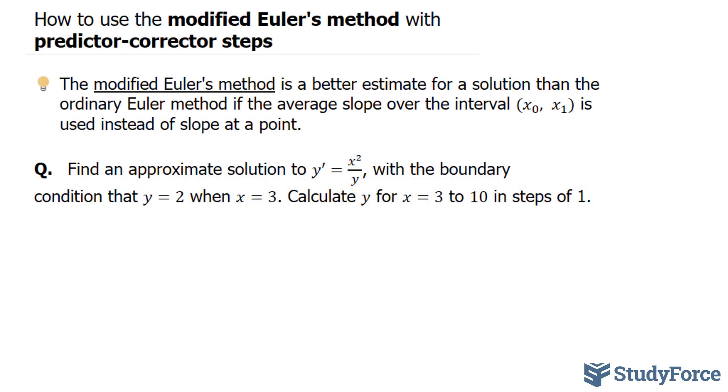In this lesson, I'll show you how to use the modified Euler's method with predictor-corrector steps. The modified Euler's method is a better estimate for a solution to a differential equation than the ordinary Euler method if the average slope over the interval x₀ to x₁ is used instead of the slope at a point.